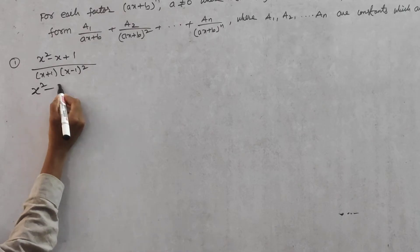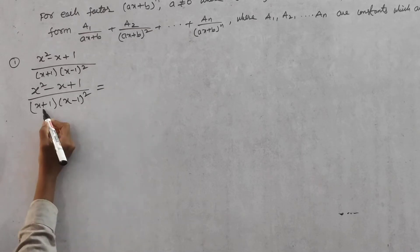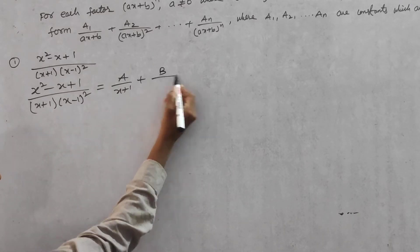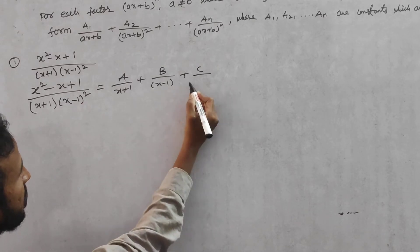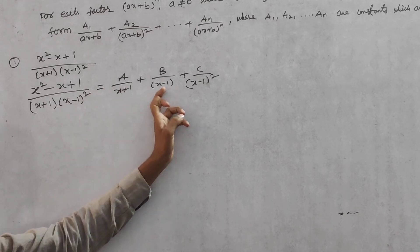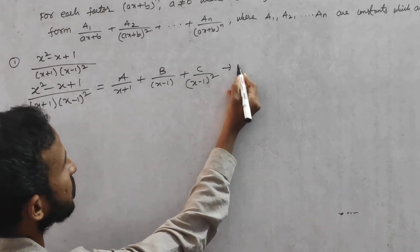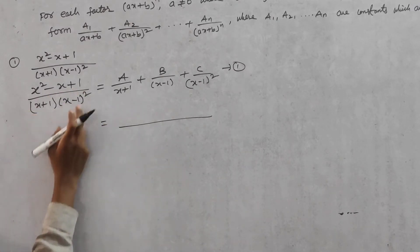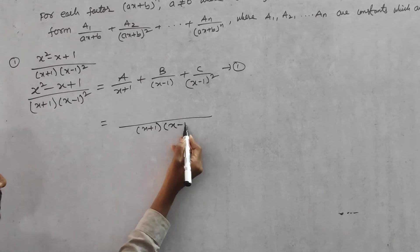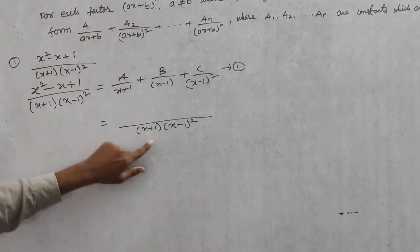So what partial fractions do we take? For (x+1)(x-1)²: the first factor x+1 is non-repeated, so we take A/(x+1). For the repeated factor (x-1)², we take B/(x-1) + C/(x-1)². This is equation 1. The LCM of the denominators on the RHS is (x+1)(x-1)².